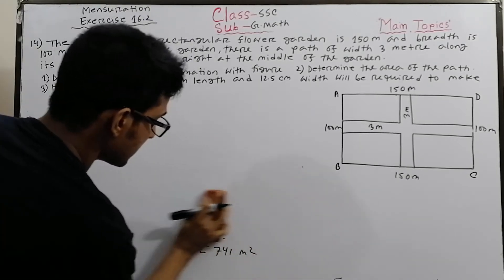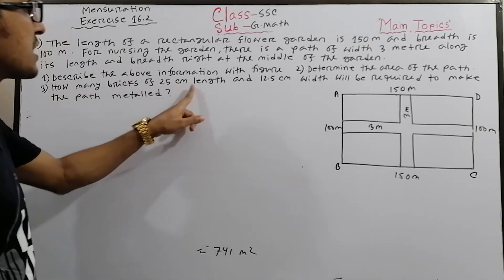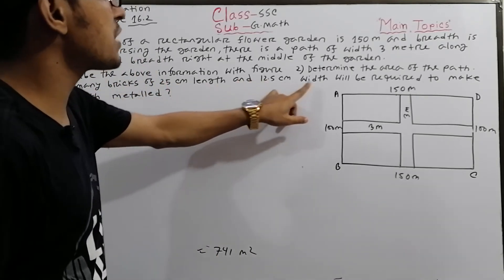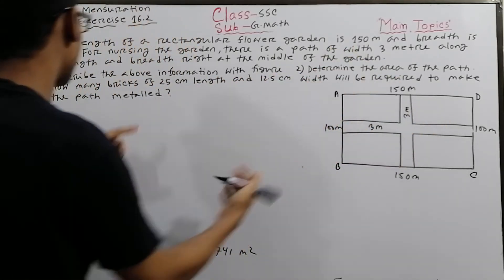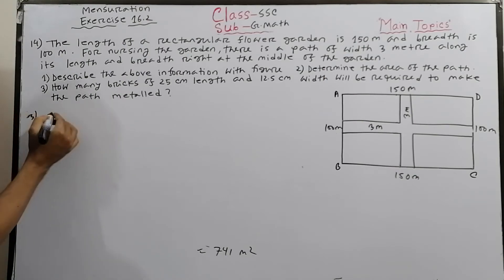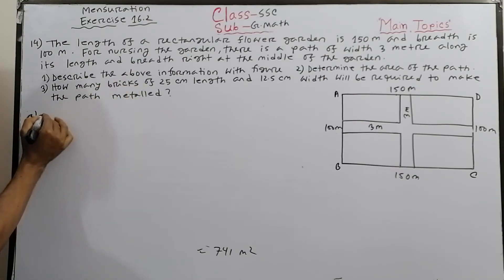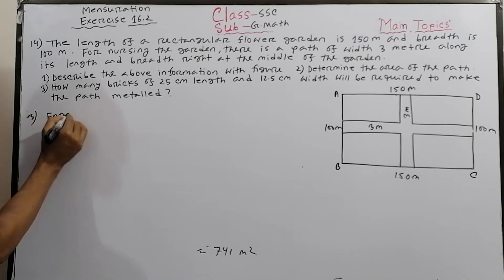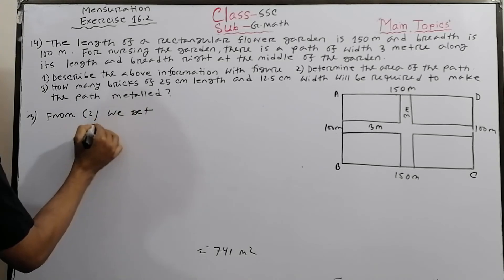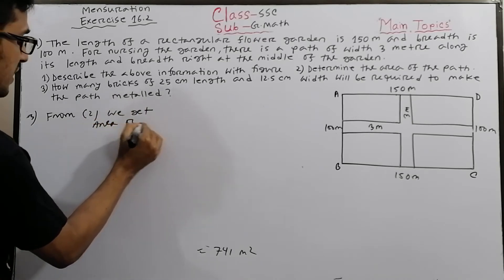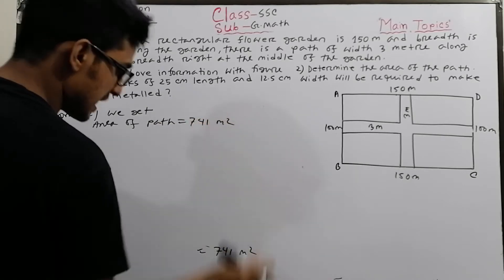For part (c): how many bricks of 25 centimeter length and 12.5 centimeter width will be required to pave the path? To find this, we use the area of the path which is 741 square meters.